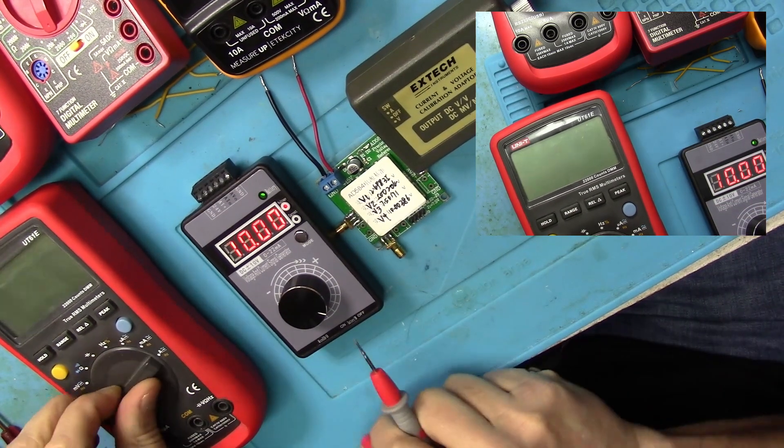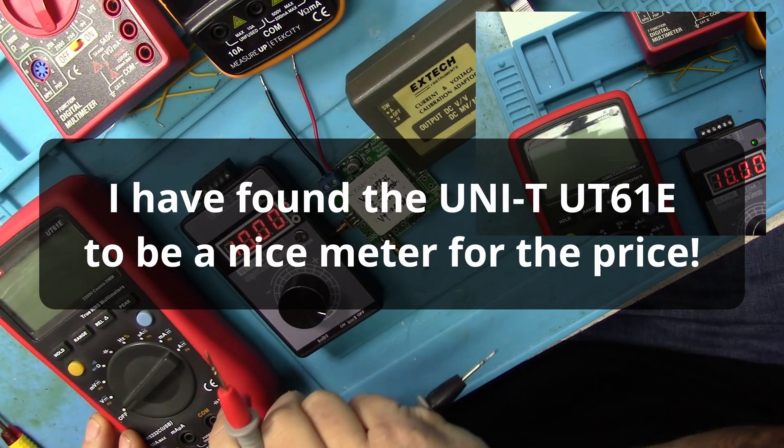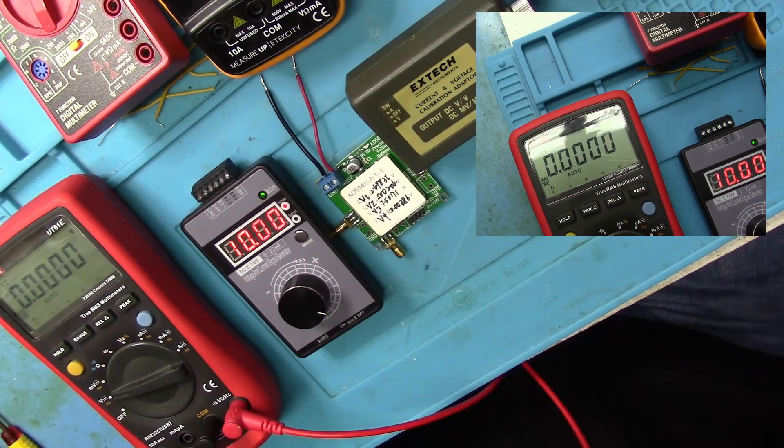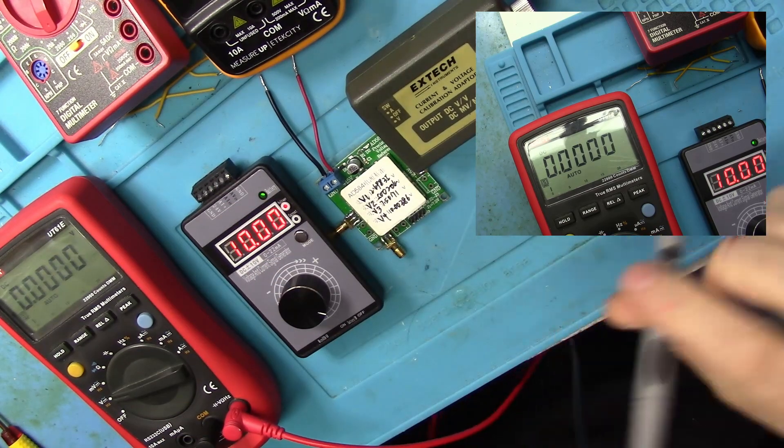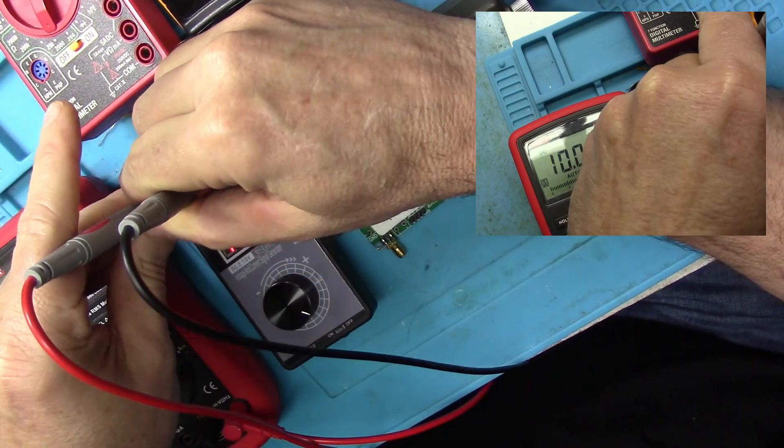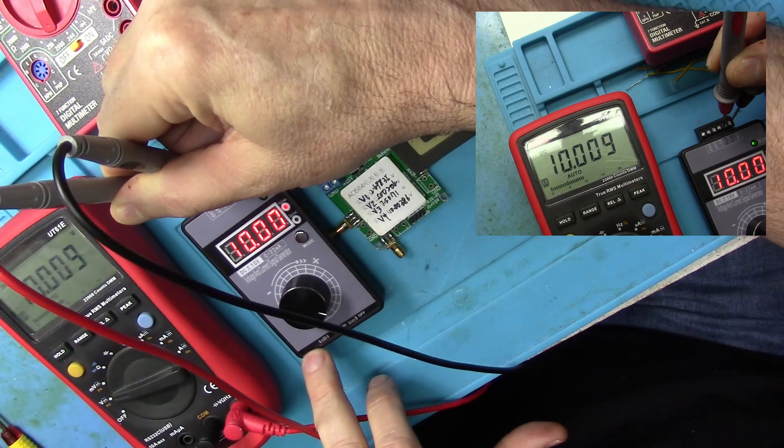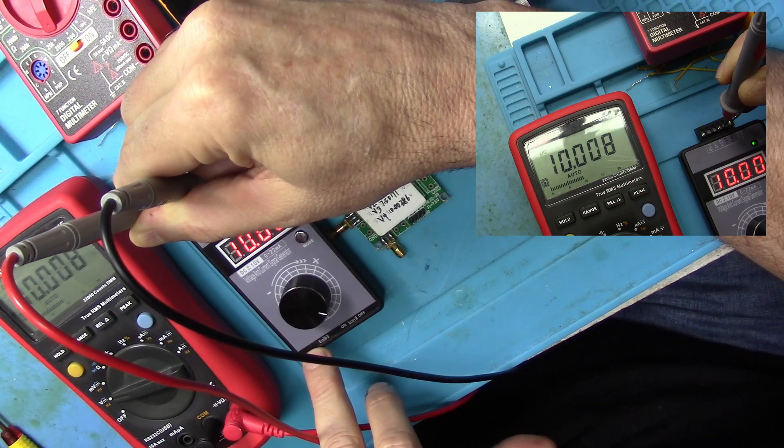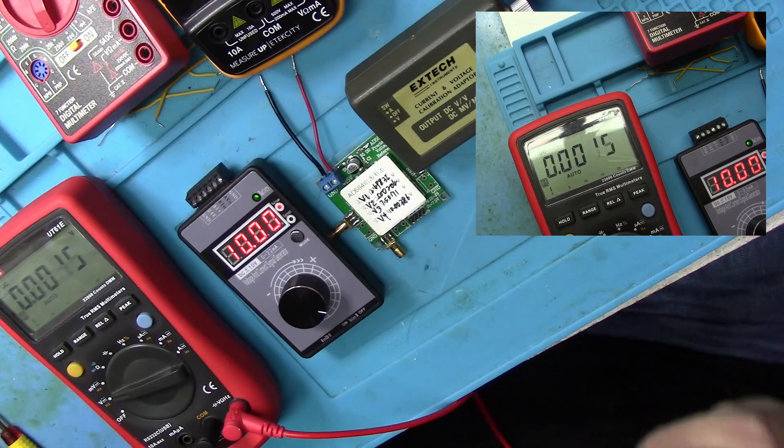So I'm going to set this aside for a second and grab my other one. We've got 10 volts, 10.00 volts showing on the voltage reference. And we've got 10.008 volts showing there. So this is the meter that I think is much more accurate.